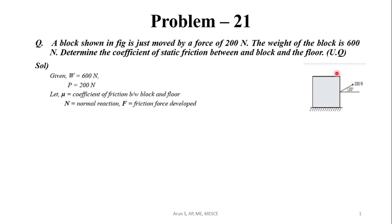To solve this, we will draw the free body diagram of this block. The weight of the block, 600 N, will be acting vertically downwards through its center of gravity. Next, the external force P is represented, acting at an angle of 20 degrees with the horizontal.